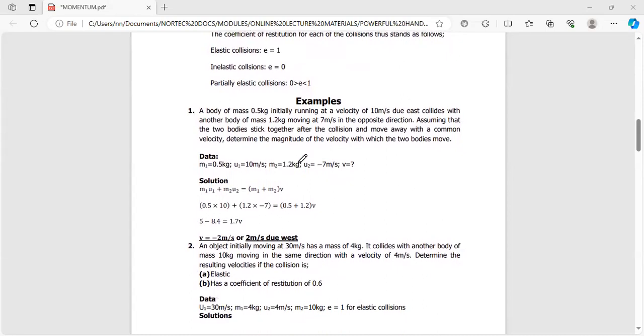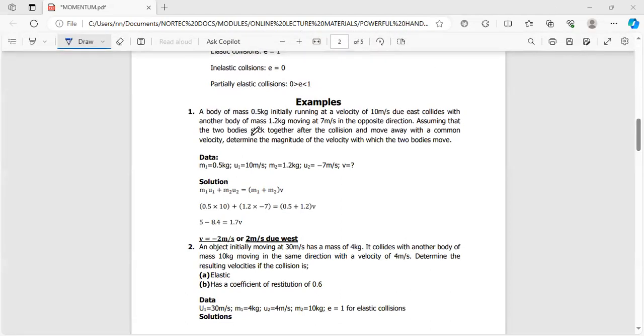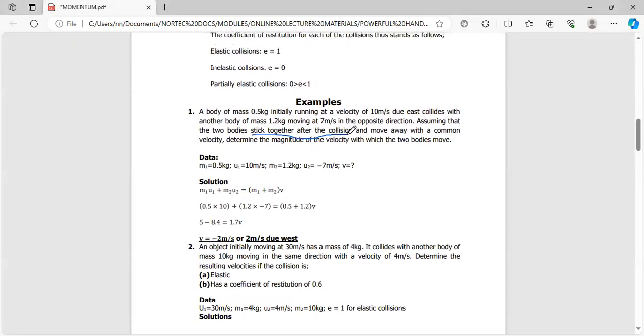Let's look at an example where we have a body of mass 0.5 kg, speed 10 m/s, going in the eastern direction. It collides with another body, mass 1.2 kg, moving at 7 m/s in the opposite direction. Assuming they stick together after the collision, what will be that velocity?